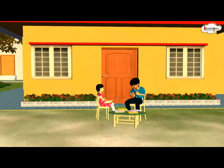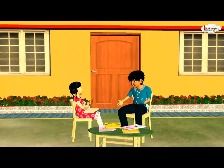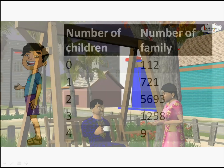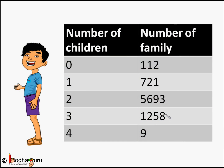Now how many large families are there in village Sundarpur? As you can see from this data, there are 1,258 families with 3 children, 5,693 families have 2 children, and 721 families have 1 child only.